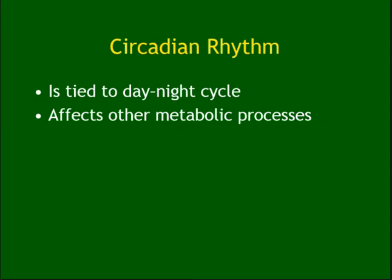Circadian rhythm is the day-and-night cycle. When you see light, it gives a signal to your brain that this is daytime; when it is dark, you start to feel that this is nighttime.